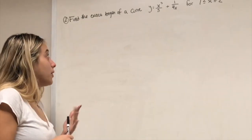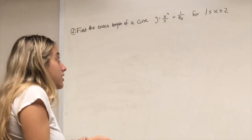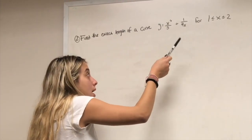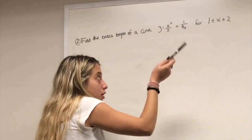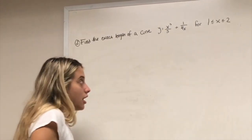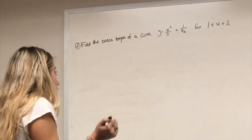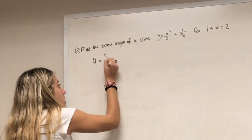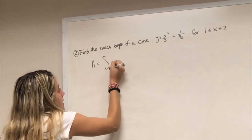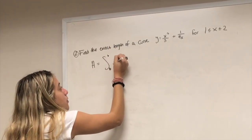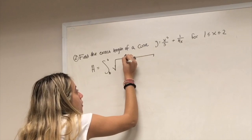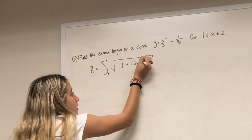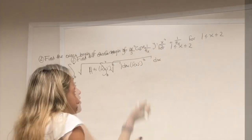Question 2: find the exact length of the curve y = x³/3 + 1/(4x) on the given interval. Remember, arc length equals the integral from a to b of the square root of 1 plus f'(x)² dx.